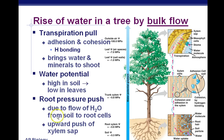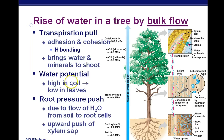Root pressure push is the water pressure caused by going from a hypotonic to hypertonic environment within the root hairs. This is not the major reason why water moves up a plant, but it is one reason. Water potential is higher in the soil and lower in the leaves, so there is a constant flow from high to low, all the way up to the leaves and out into the atmosphere. Within the xylem, we have adhesion and cohesion.